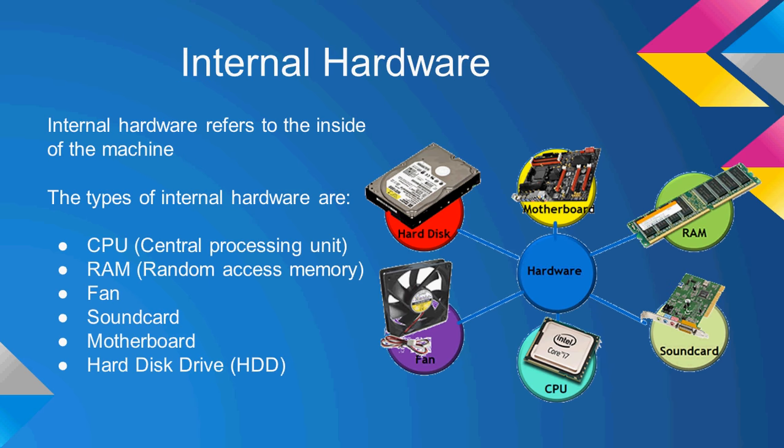There's also internal hardware. Internal hardware refers to the inside of the machine, usually the components that you cannot see — hardware such as the CPU, the RAM, the fan, the sound card, the motherboard, and the hard disk drive.